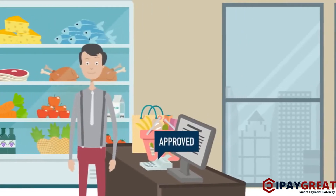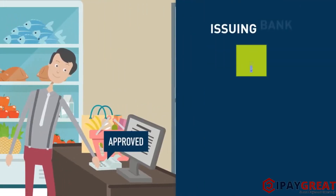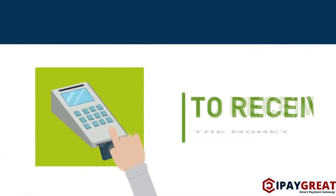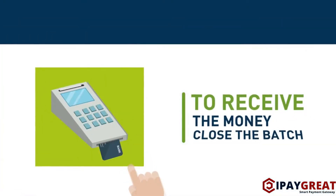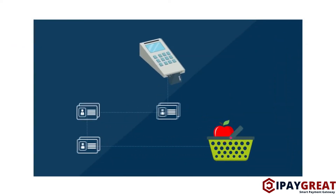Bob sees the approved message on his POS terminal. The issuing bank places a hold for $1 on Clara's credit card account. For Bob to receive the money for the sale, he first needs to close the batch. As cardholders come in and buy apples, all authorizations are stored in the POS terminal in a batch.